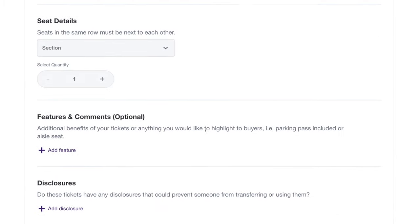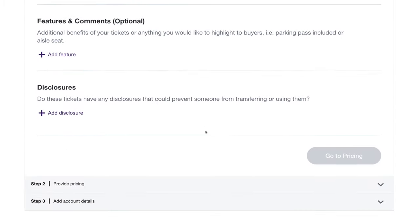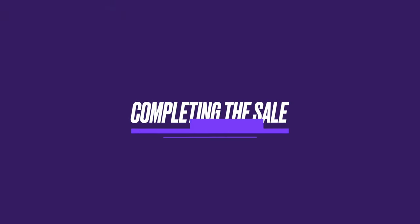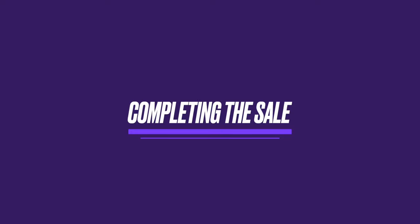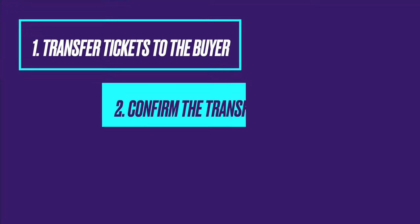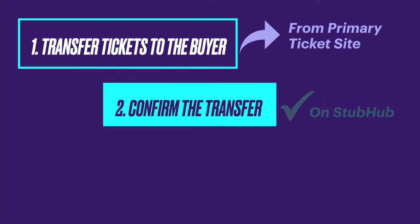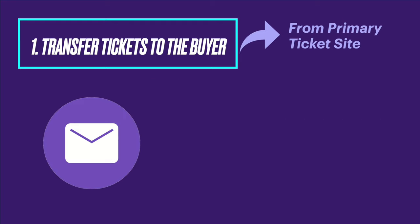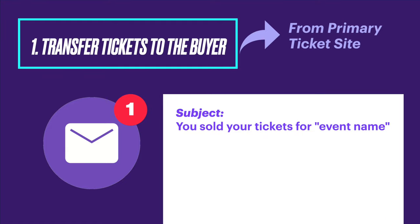Continue through the remaining steps to list your tickets. Congratulations — you've sold your tickets! Delivering mobile transfer tickets to a buyer is a two-step process. You'll need to transfer them to the buyer and then confirm the transfer. First, check your inbox for an email from StubHub notifying you of the sale. The subject line reads: "You sold your tickets for..."